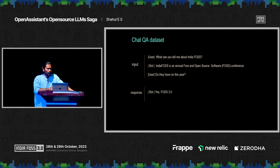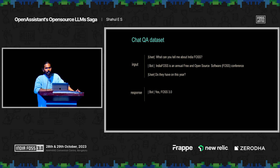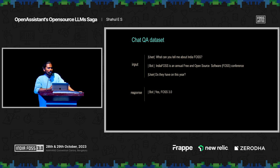You might have seen language models that can follow instructions but cannot chat with you. The difference between a model that can only follow one short instruction and one that can chat back and forth lies in the type of data used to fine-tune it. If the input is a full conversation rather than one instruction, and you fine-tune a model on such multi-turn data, you elicit conversational capabilities in the model. Since Open Assistant was mainly focused on creating chat-based assistants, we were mostly focused on creating datasets in such formats.